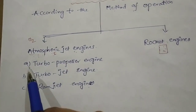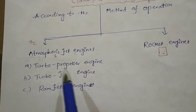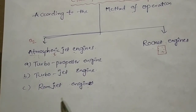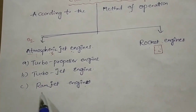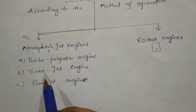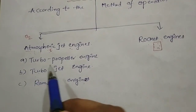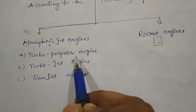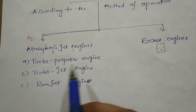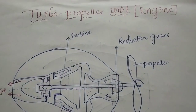Atmospheric jet engines are classified into three types: turbo propeller engine, turbo jet engine, and ramjet engine. Today we are discussing about the turbo propeller jet engine, or simply the turbo propeller engine.